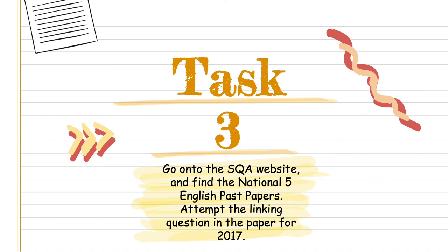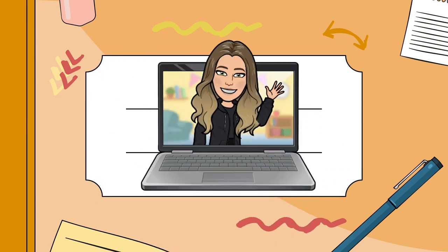This leads us to our final task — task three. We have discussed four questions in total and have been through how to lay out the answers. You should be feeling confident to attempt a past paper question yourself. Please go onto the SQA website, find the RUI past paper from 2017 and attempt the linking question yourself. This will help you identify the question amongst others and improve your exam technique. Thank you so much for listening and partaking in the revision tasks. I hope this has helped you understand linking questions a little better. Please remember to give this video a like, subscribe for more revision content, and have a wonderful week.